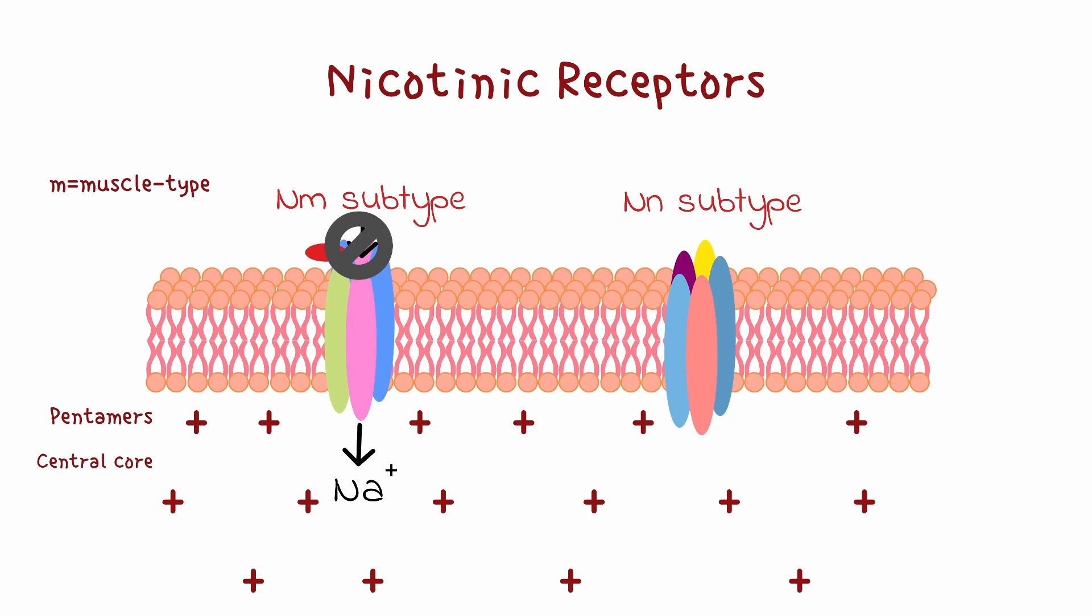The NN receptor. Subscript N here stands for neuronal type. These are found in the autonomic ganglia and the central nervous system. In the autonomic ganglia, they mediate the fast transmission from the preganglionic to the postganglionic fiber, driving the entire autonomic system.